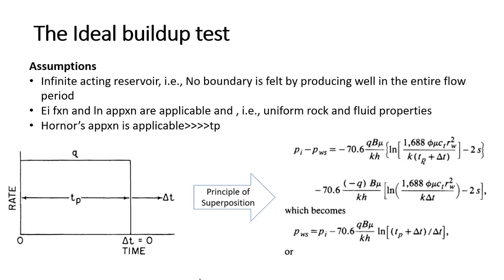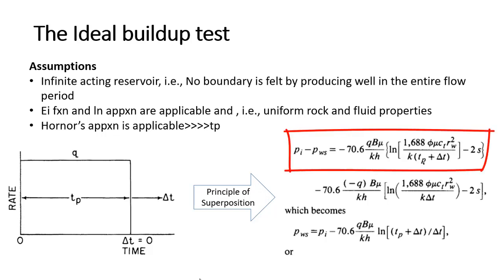So when a well is producing at a constant rate for Horner's producing time tp, and then is suddenly shut in, from that point delta t time starts and pressure begins building inside the reservoir, also near the wellbore, and that is being recorded. Using the principle of superposition, if we write the equation for pressure at the wellbore, pi minus pws equals minus 70.6 qμB / kh × ln[1688 φμct rw² / k(tp + Δt)].